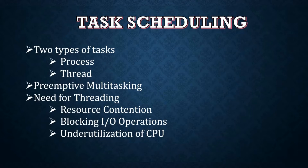Another issue is blocking input-output operations. Whenever the process is waiting, it will not do any operation, so there will be no input-output operations at that time — this is called blocking of input-output operations. Another issue is underutilization of CPU. If it is a single-threaded application, that application will make use of only a single CPU. To overcome all these issues, we have to use threading.